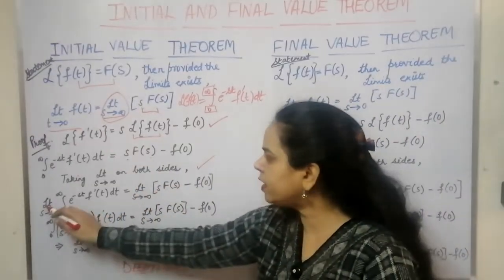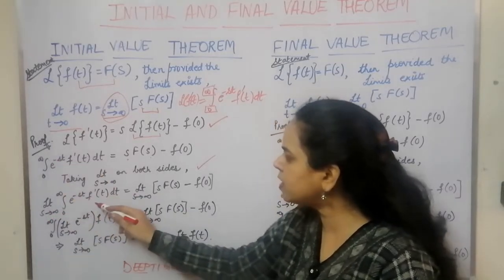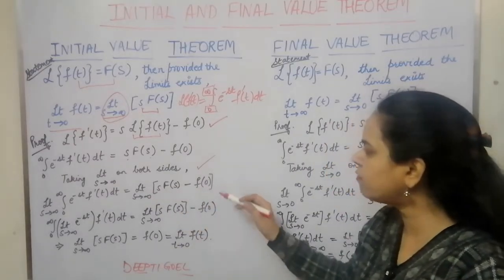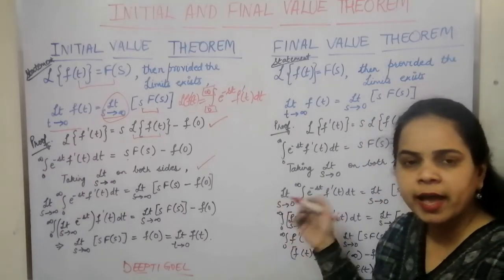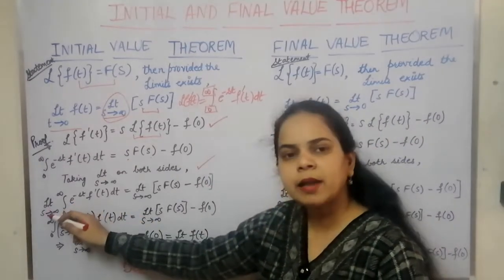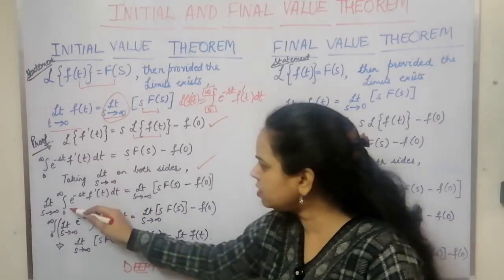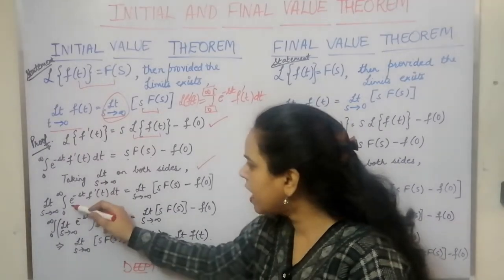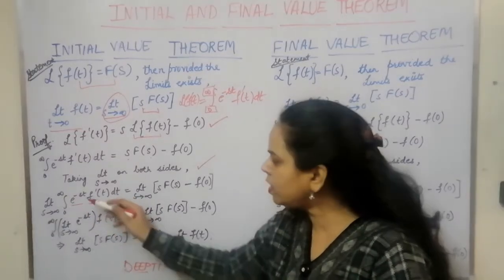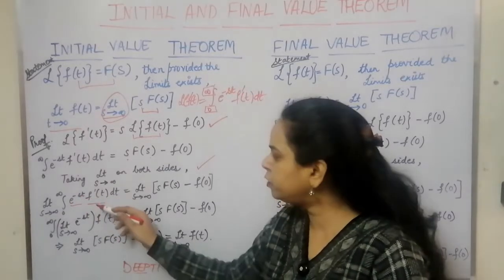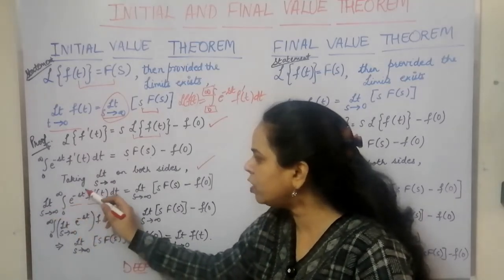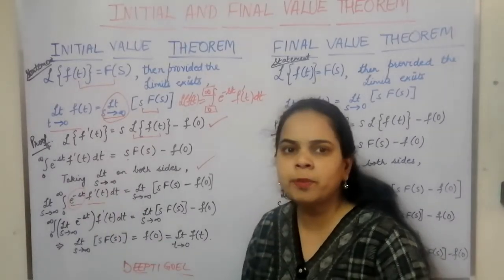Taking the limit s→∞, we get: limit s→∞ of the integral from 0 to infinity of e^(−st)·f'(t) dt, which equals limit s→∞ of [s·F(s) − f(0)]. The limit can be taken inside the integral. Since the limit is on s tending to infinity, and we have two terms — e^(−st) and f'(t) — only the exponential term contains the variable s. So the limit s→∞ is associated only with the e^(−st) term.